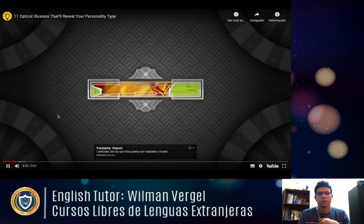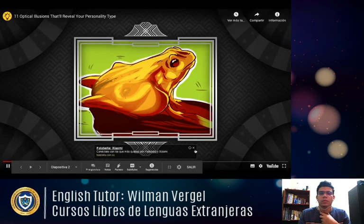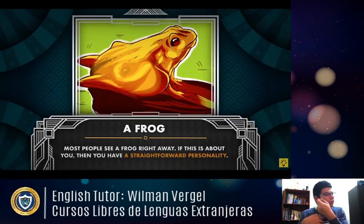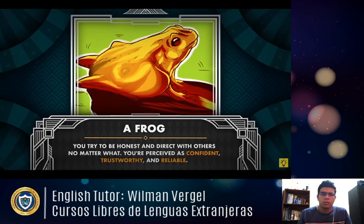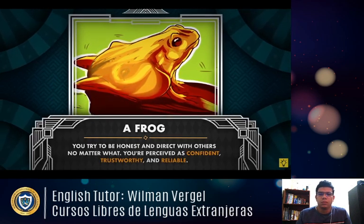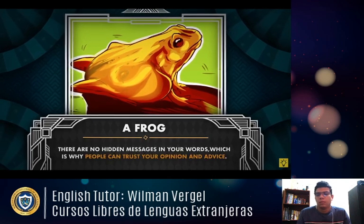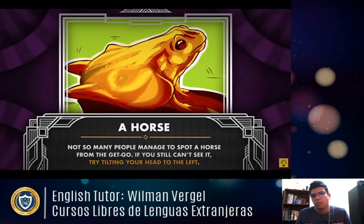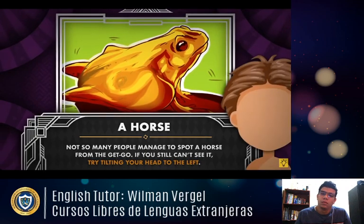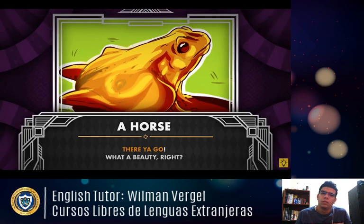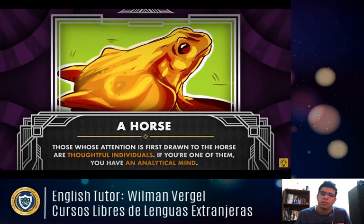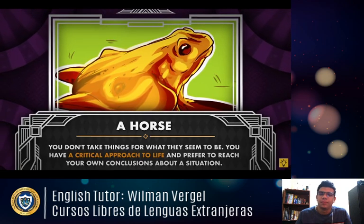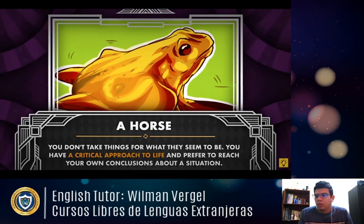Number one — what do you see first? A frog. Most people see a frog right away. If this is you, then you have a straightforward personality. You try to be honest and direct with others no matter what. You're perceived as confident, trustworthy, and reliable. There are no hidden messages in your words, which is why people can trust your opinion. A horse — not so many people spot a horse from the get-go. Those whose attention is first drawn to the horse are thoughtful individuals with an analytical mind. You don't take things for what they seem; you prefer to reach your own conclusions.